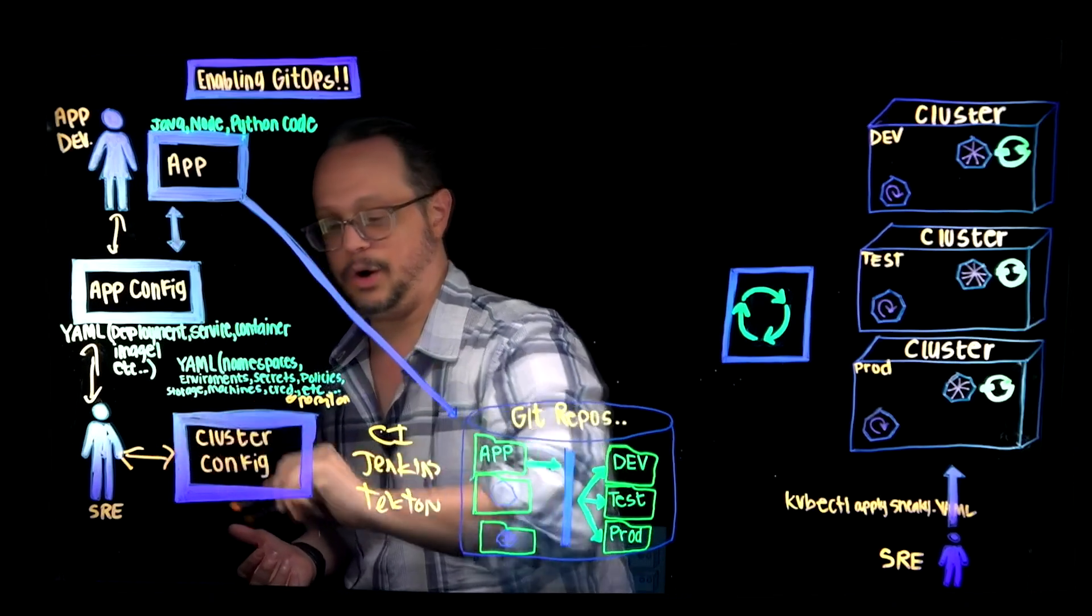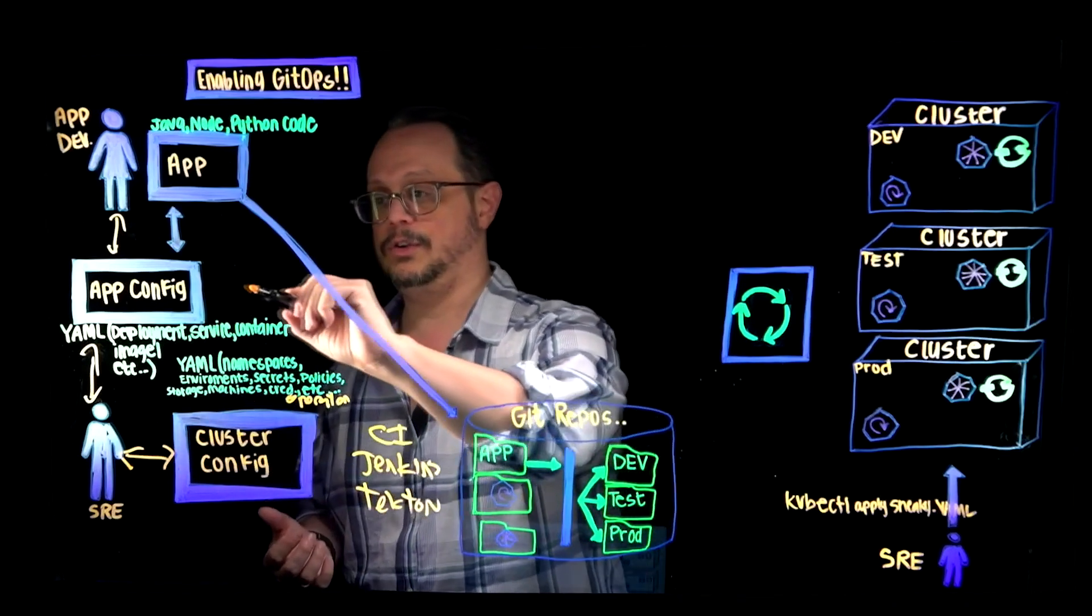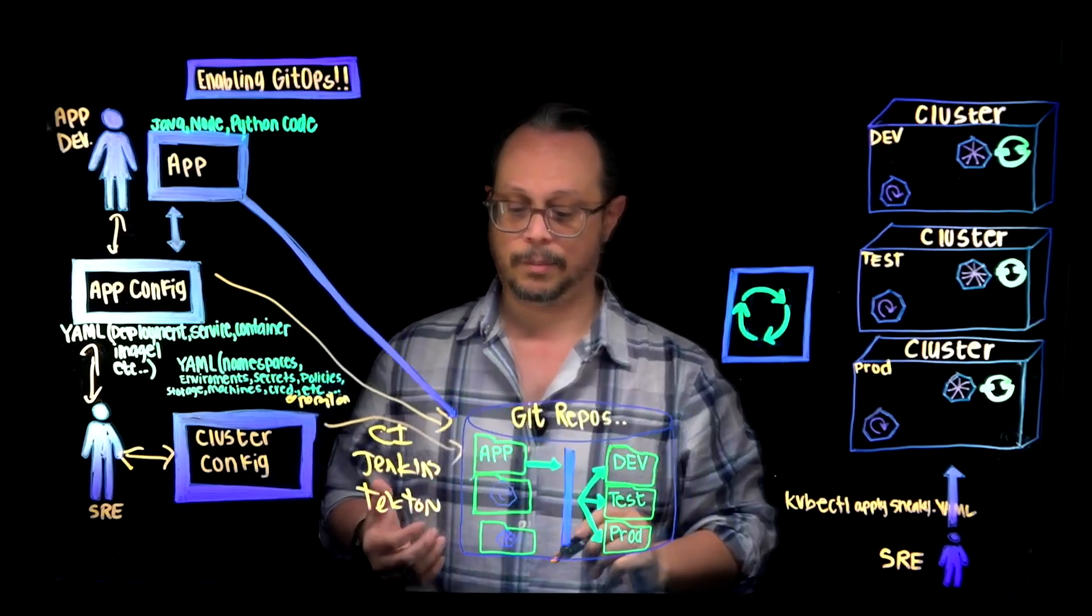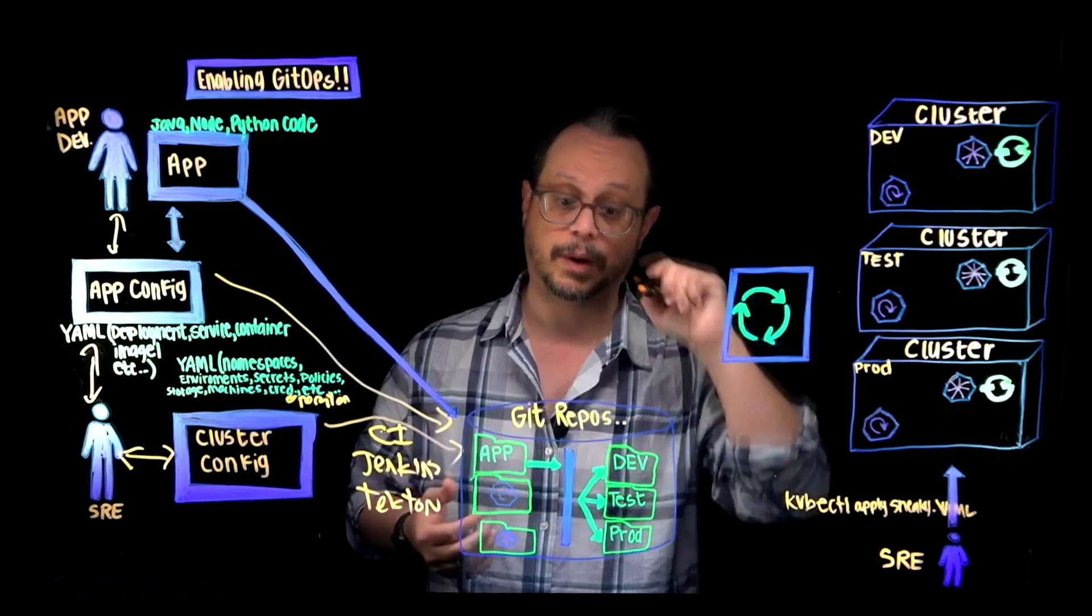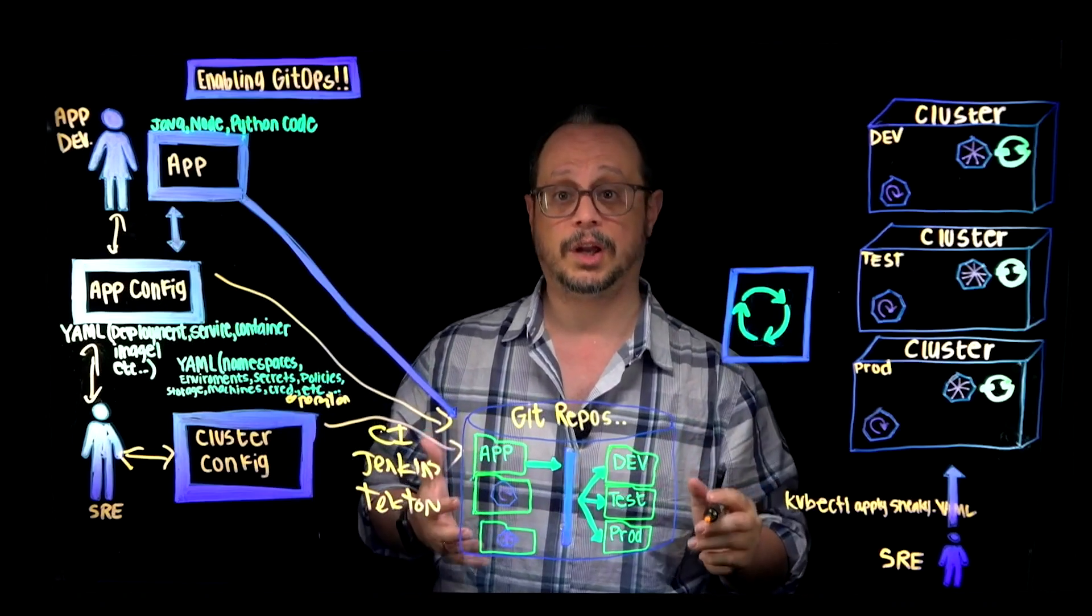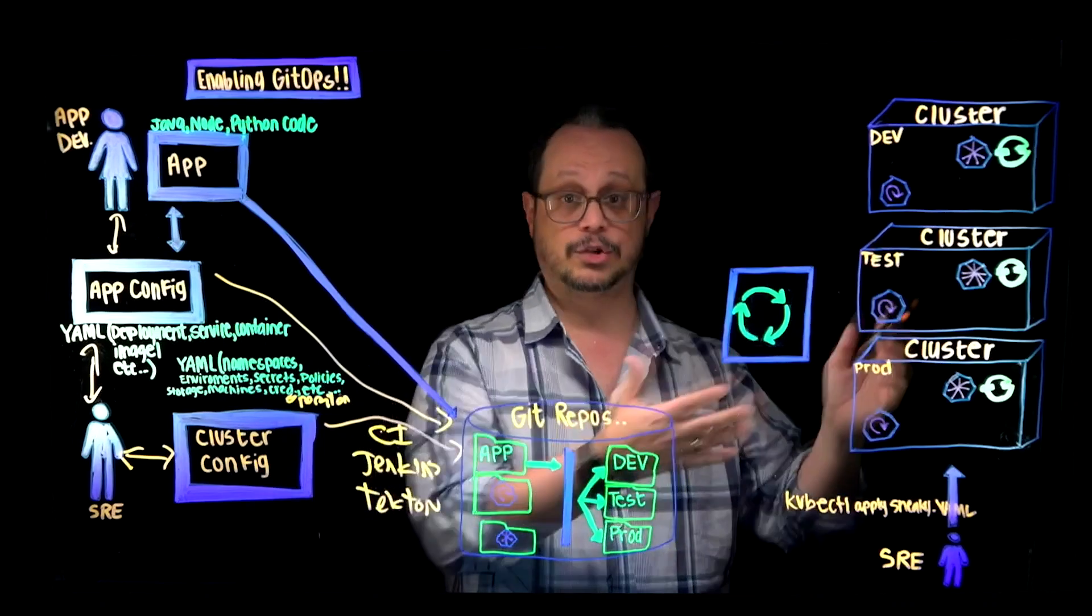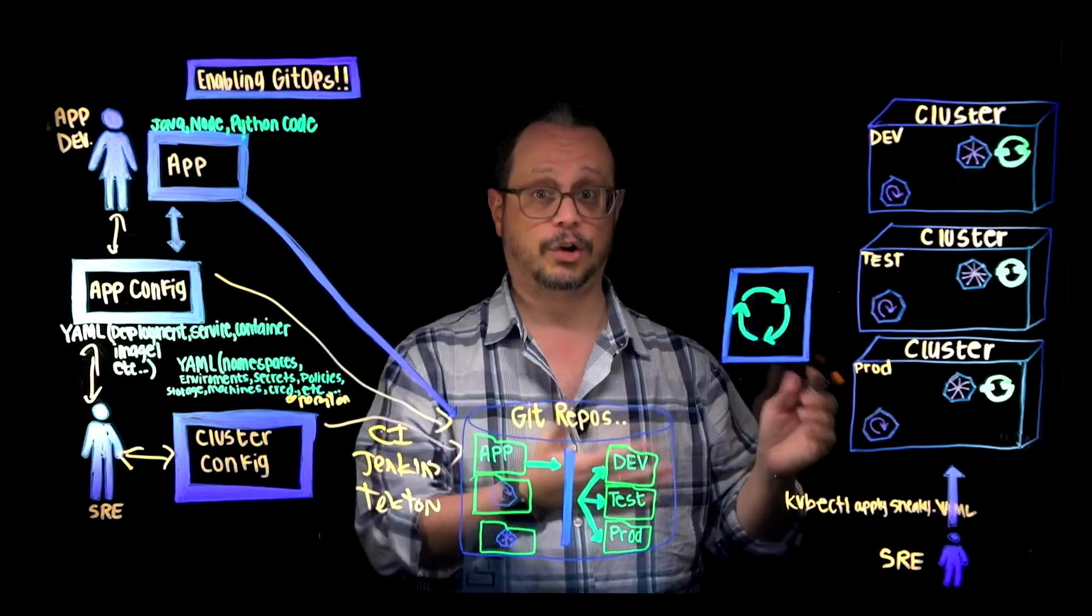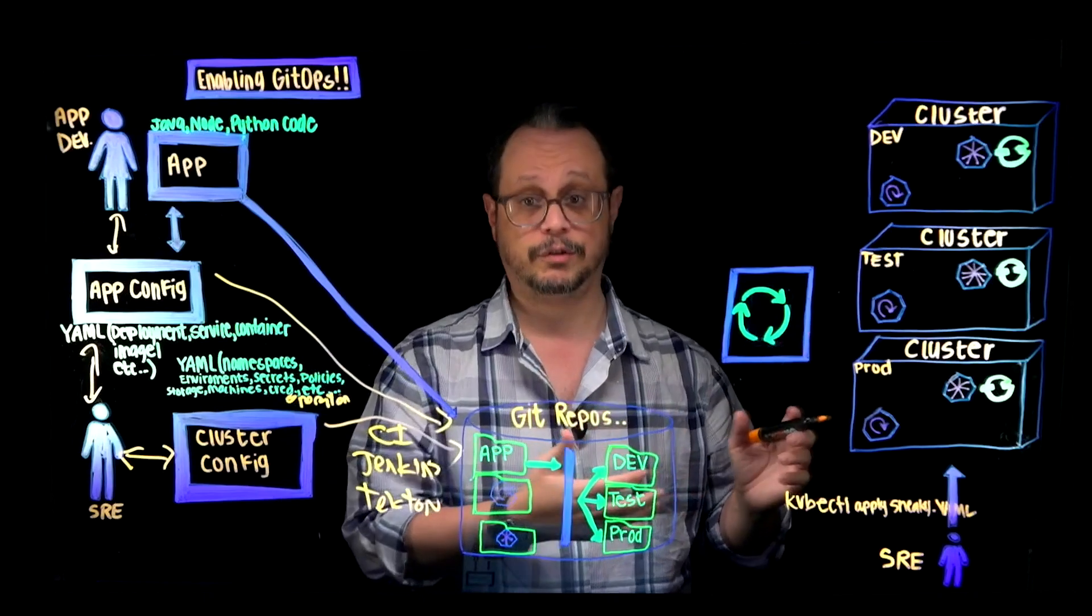So these are all software artifacts. And all of these can use the same mechanisms for being checked into a source control repository. So Git really becomes the source of truth and not the actual servers or the clusters, for the state of your cluster and the configuration of your application.